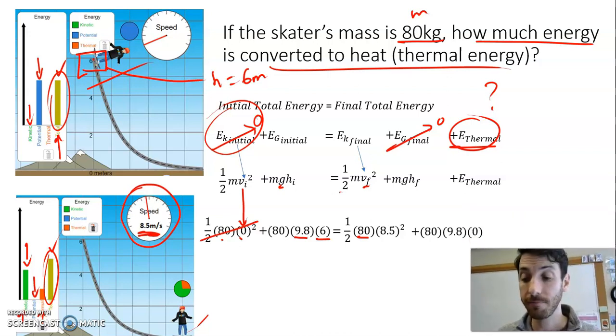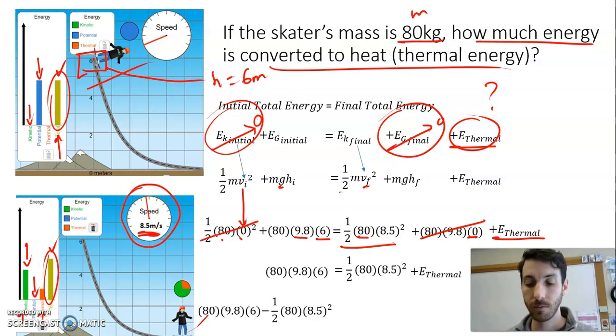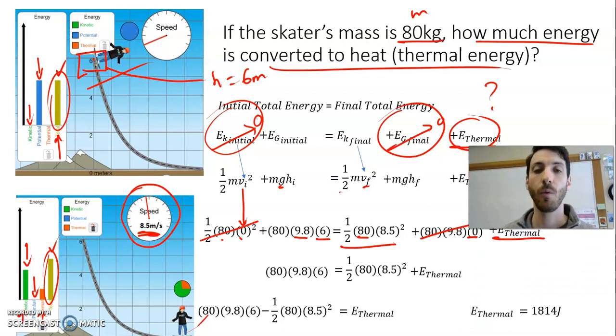Their height above the ground is zero—their final height. So again, this is why we can just ignore this term. And there's thermal energy. Now we've done the physics; now it just turns into an algebra problem. We're essentially trying to isolate for this value. Let's subtract this term from both sides. After we've done that, we find our answer of 1,814 joules. Energy is measured in joules.